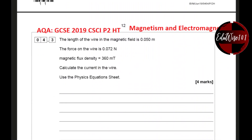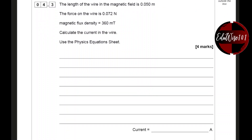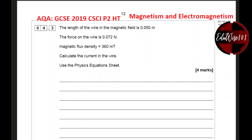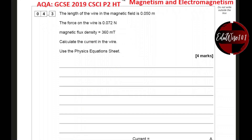Question 4.3. The length of the wire in the magnetic field is 0.05 metres. The force on the wire is 0.72 newtons. The magnetic flux density, which is B, is 360 mT. This is milli-Tesla, and milli is 10 to the power of minus 3.